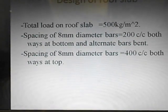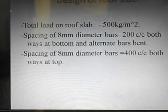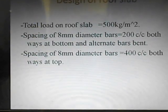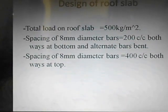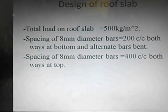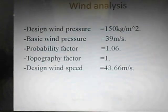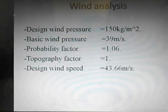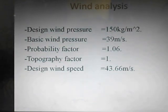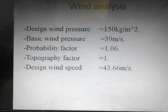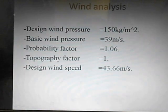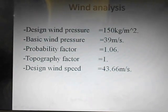Design of roof slab — the basic design criteria is the concept of thin cylinders. The total load on the roof slab is 500 kg per meter square, and you can see the spacing of the diameter bars. Wind analysis is carried out by various factors such as topography factor, terrain factor, and probability factor. The design wind pressure is 150 kg per meter square, and the probability and topography factors are 1.06 and 1 respectively.